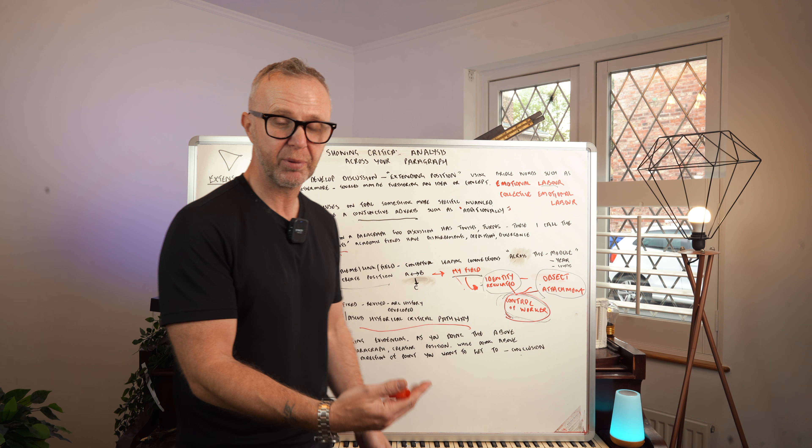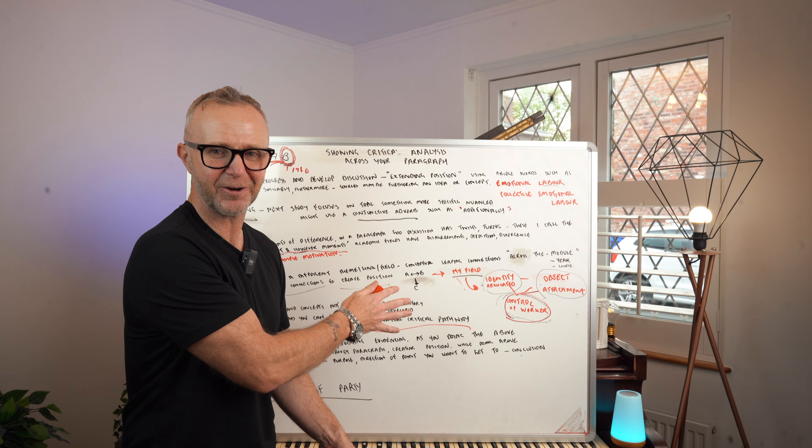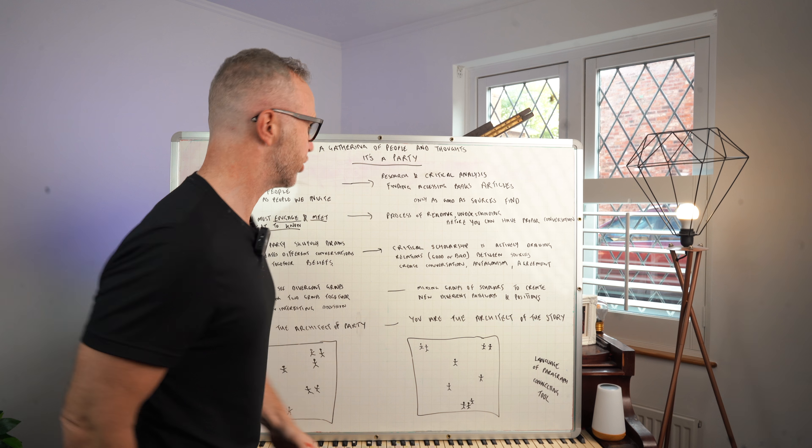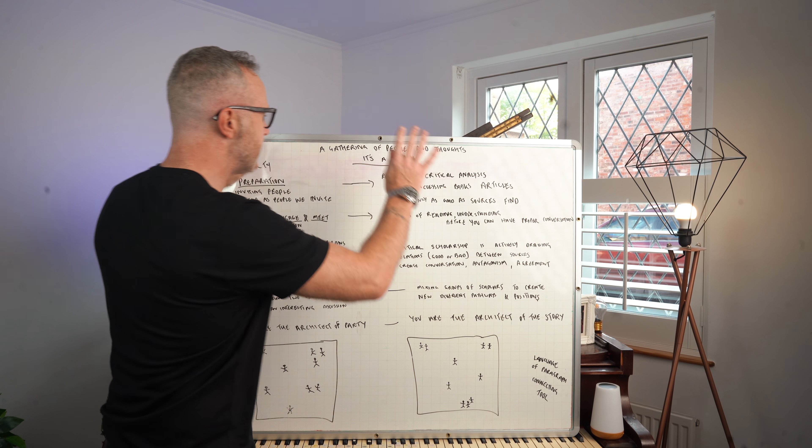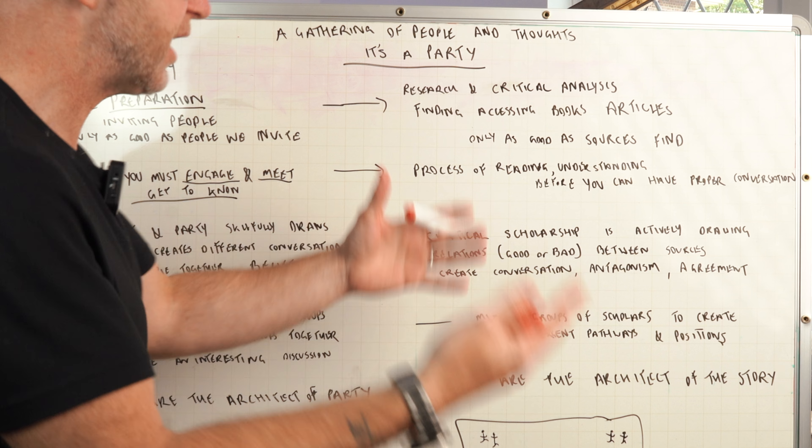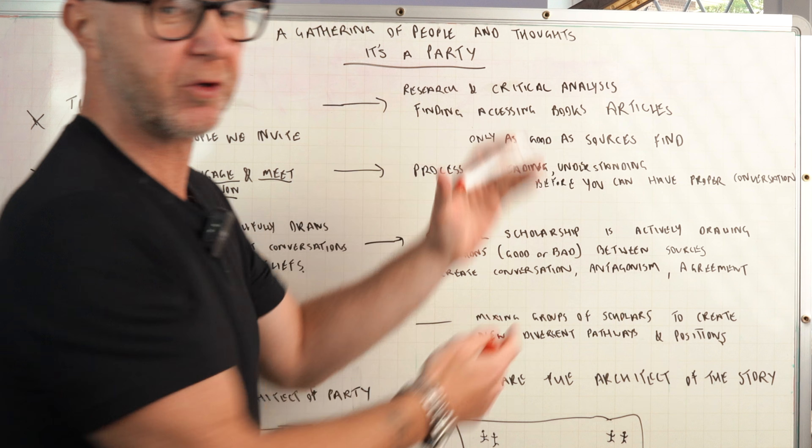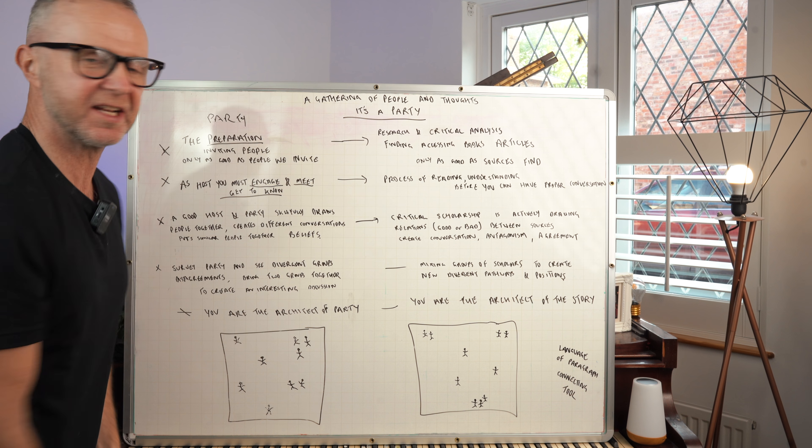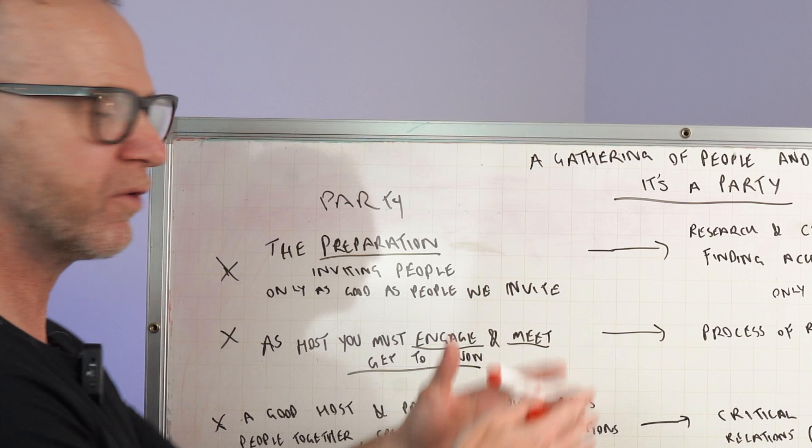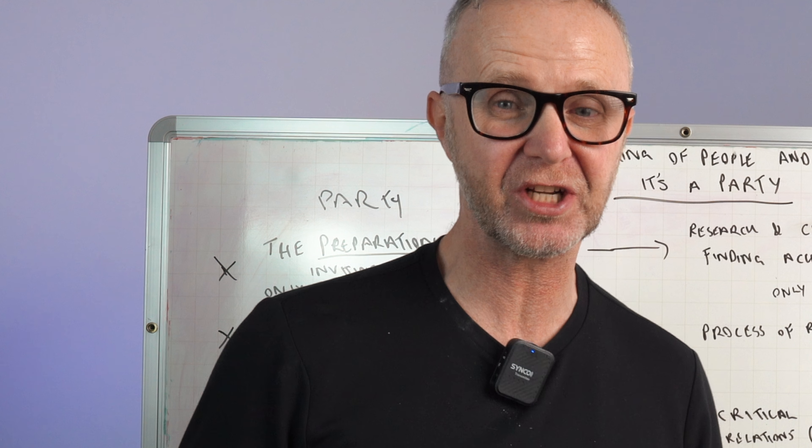Now I've got a nice example that I want to move on to, to help us understand how we do all this better on the paragraph. I want to try and get you to think about a paragraph and writing critically like a conversation. In this I want you to imagine in this analogy a gathering of people and thoughts. Think of a party, and we're comparing a party to actually doing critical analysis. First of all, a party we have to do the preparation. We've got to invite the people, and a party is only as good as the people that we actually invite.